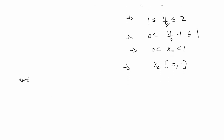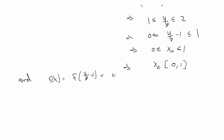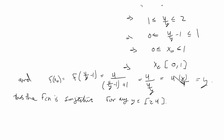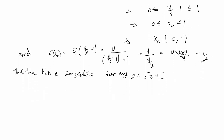Now we plug x₀ into the function: f(x₀) = 4/((4/y − 1) + 1) = 4/(4/y), because the −1 and +1 cancel. This equals 4 × y/4, which simplifies to y. Thus we have proved the function is surjective for any y ∈ [2,4].